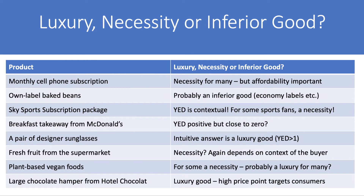Here's my thinking. A cell phone subscription — well, maybe 20 years ago it was probably a luxury item. Now, a monthly cell phone subscription is probably a necessity, though affordability remains crucial, particularly the type of mobile phone subscription you're able or willing to take. My instinct is that own-label baked beans — economy brands you often see in supermarkets — are probably an inferior good, particularly those low-price economy label products that supermarkets target at relatively low-income households. A Sky Sports subscription package — again, income elasticity of demand is contextual. For some fans it's a necessity; they'll hang on to it even if their income changes. For others it's quite expensive, and they'll only take it out if they think they can afford it month to month.